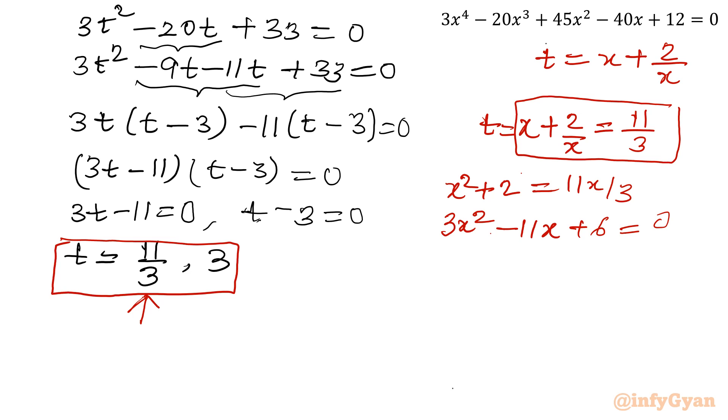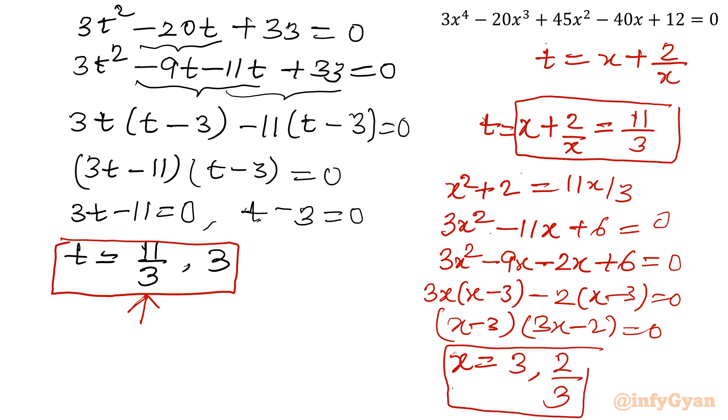Now 6 times 3 is 18. And 11, I can write 9 times 2, 9 plus 2 is 11. So let me split minus 11x as minus 9x minus 2x plus 6. Again you can apply quadratic formula. So ultimately it will come out x minus 3, 3x minus 2 equal to 0. So x will be equal to 3 and 2 over 3. Now we are going to put two solutions from the first quadratic equation by t equal to 11 by 3.